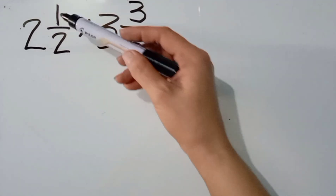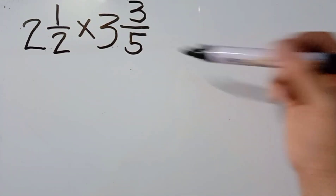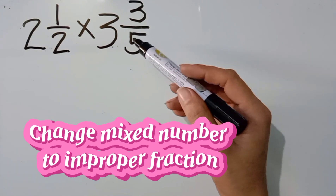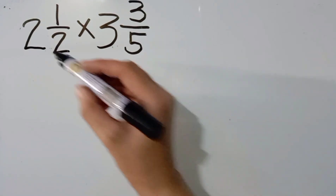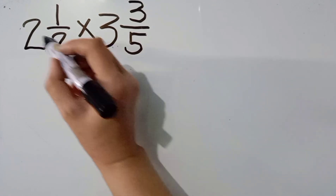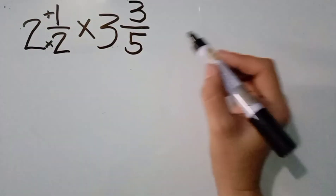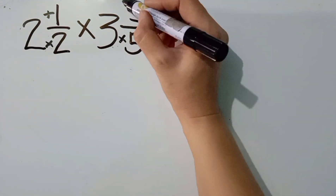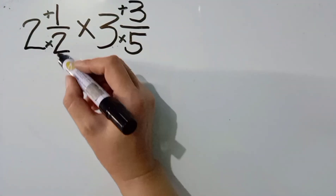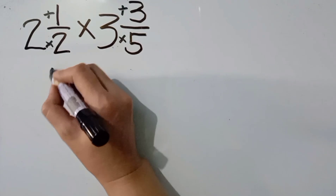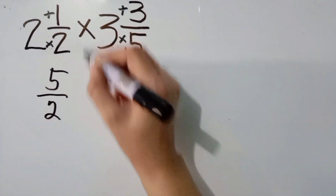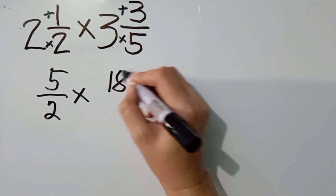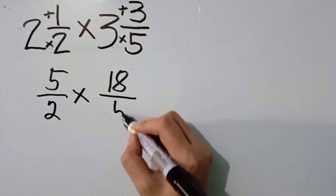Here is another one: 2 and 1 half times 3 and 3 fifths. So, we are going to change the mixed numbers to improper fraction. Multiply lang natin itong denominator sa kanyang whole number and then add sa numerator. Ganon din po dito — ang 5 ay i-multiply lang natin sa kanyang whole number and then add naman sa numerator. So, 2 times 2, the answer is 4. 4 plus 1, the answer is 5 over 2. Times. And then, 5 times 3, the answer is 15. 15 plus 3, the answer is 18. Copy the denominator na 5.